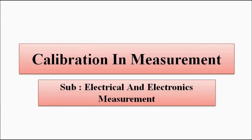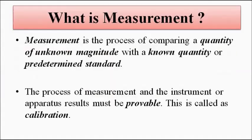Before doing that, we should have a quick look at the basic concept of measurement. Measurement essentially involves the comparison of the quantity or parameter of unknown magnitude — which we want to measure — with a known quantity or predetermined standard. This is the basic concept of measurement, and the results we get must be provable. This process is called calibration.